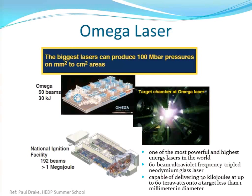The Omega laser is one of the most powerful and highest energy lasers in the world. It has 60 beams and is capable of delivering 30 kilojoules and up to 60 terawatts onto a target of less than a millimeter in diameter. Another similar facility is NIF, which is a lot harder to get access to and more expensive to use. That's one of the reasons we use Omega, and our team at Livermore has a good connection with the people there.